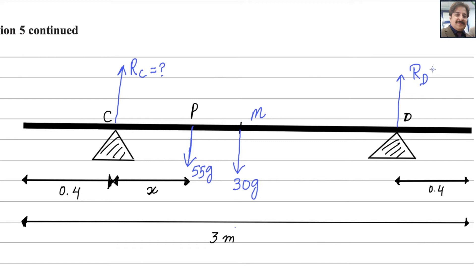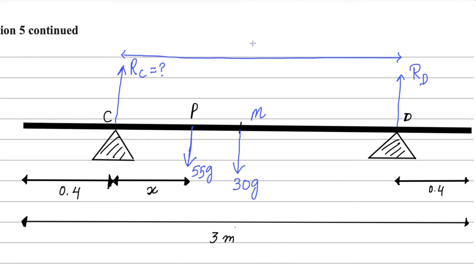We need to find the perpendicular distance from the pivot for all forces. The length from C to D: since AC equals 0.4 and DB equals 0.4 and total length is 3, subtracting both gives CD equals 2.2 m. This is the perpendicular distance of C from point D.